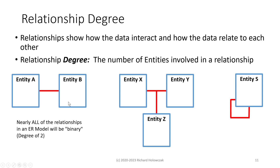Nearly all of the relationships you create in an Entity Relationship Model will be binary relationships, meaning there are 2 entities involved — just as with Entity A and B. For this lecture, we won't consider relationships of degree 3 or degree 1; we'll use a separate lecture to talk about those. For now, just assume there will be 2 entities involved in a relationship.